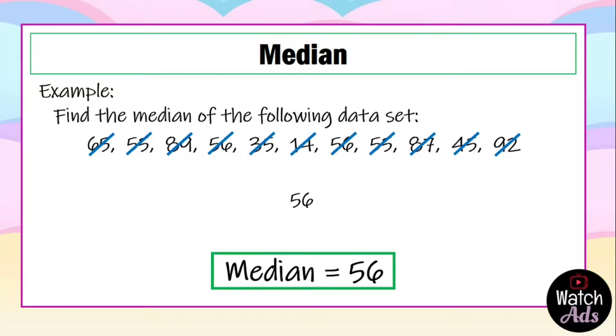If the total numbers in the data set is an odd number—an odd number is a number that cannot be equally divided by 2—this is the simplest way to find the median. But what if the total numbers in the data set is even?